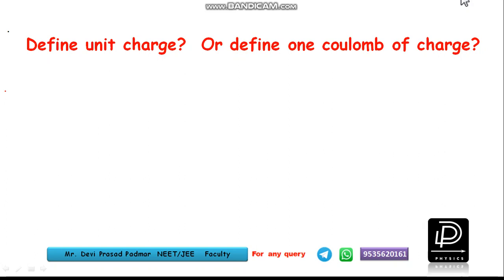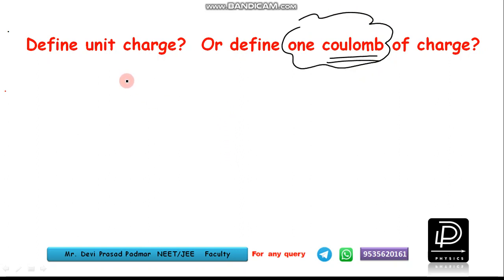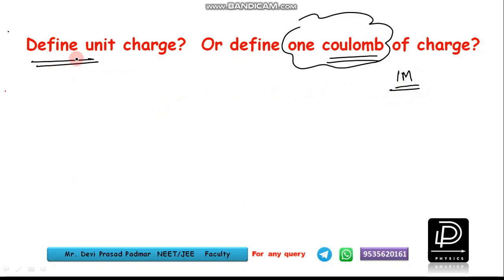Hello students, today let us define unit charge, or we can define one coulomb charge. Coulomb is the SI unit of electric charge. If they ask you to mention the SI unit of electric charge, it is just enough to write 'coulomb.' But if they ask you to define the unit of charge, you need to write the answer in a sentence. Be careful.